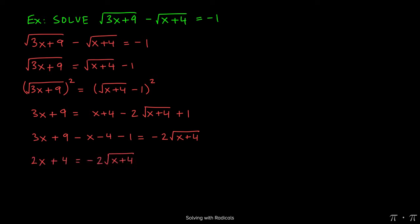3x minus x gives us 2x, 9 minus 4 gives us 5, and 5 minus 1 gives us 4 on the left-hand side. The right-hand side stays as it is. Now since we have the radical isolated on the right-hand side, we can go ahead and square both sides of the equation.